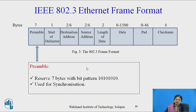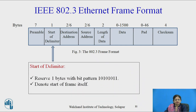The first field is the preamble, which reserves 7 bytes with a bit pattern of 10101010. It is used for synchronization. The second field is the start of frame delimiter, which reserves 1 byte with bit pattern 10101011 and denotes the start of the frame itself.